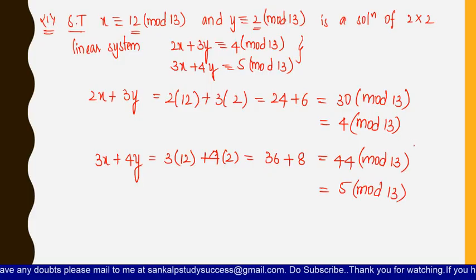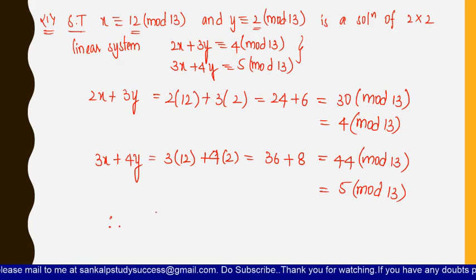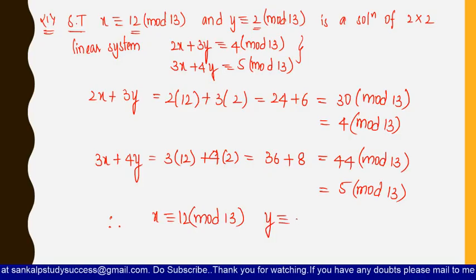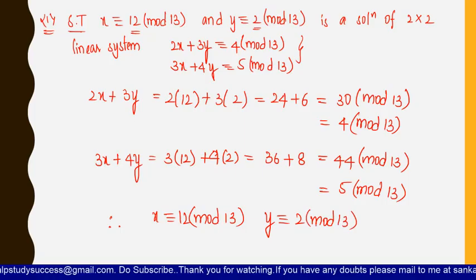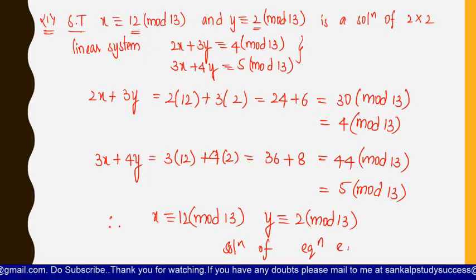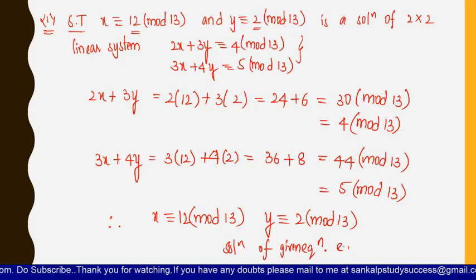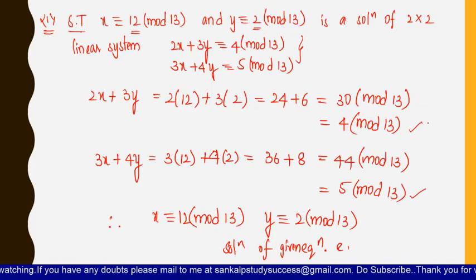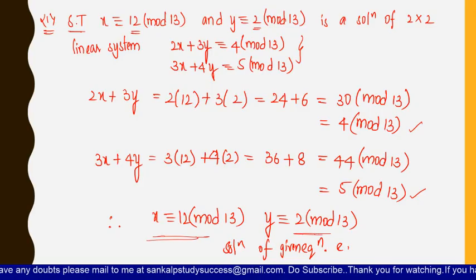By solving these we get 4 mod 13 and 5 mod 13. Therefore we can say that every pair x ≡ 12 (mod 13) and y ≡ 2 (mod 13) are the solutions of the given equations. By substituting the values of x and y we obtained 4 mod 13 and 5 mod 13, thus proving that x ≡ 12 (mod 13) and y ≡ 2 (mod 13) are indeed solutions of the given equations.